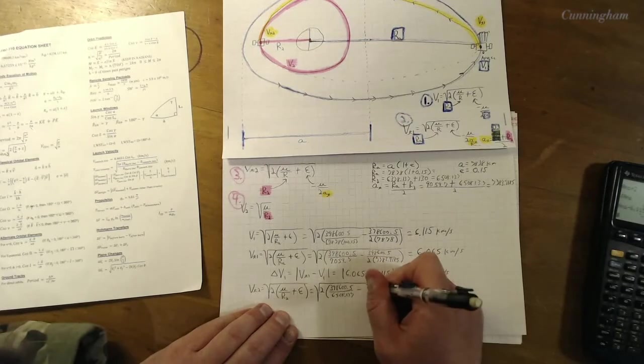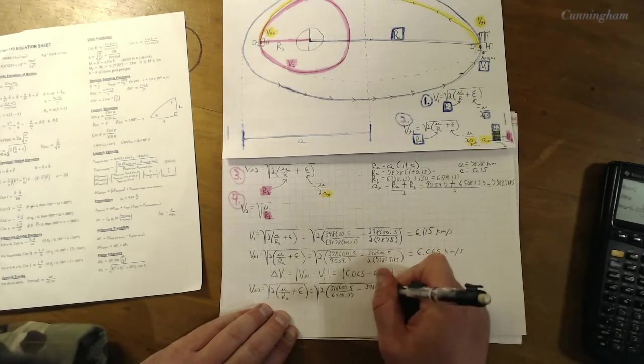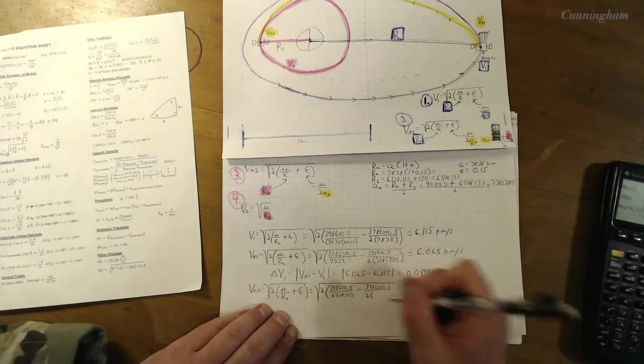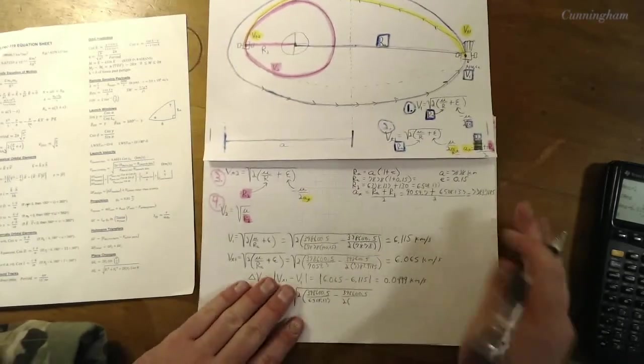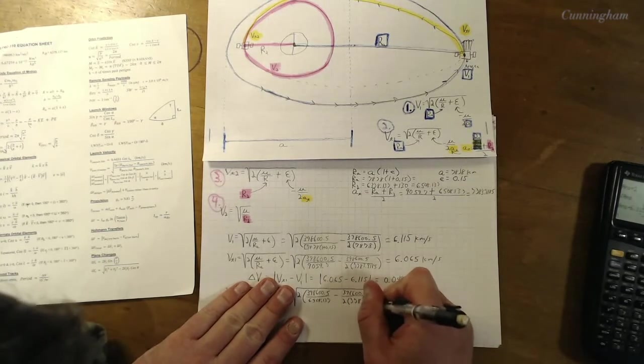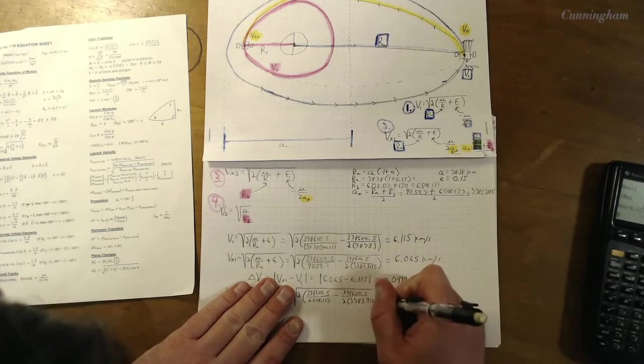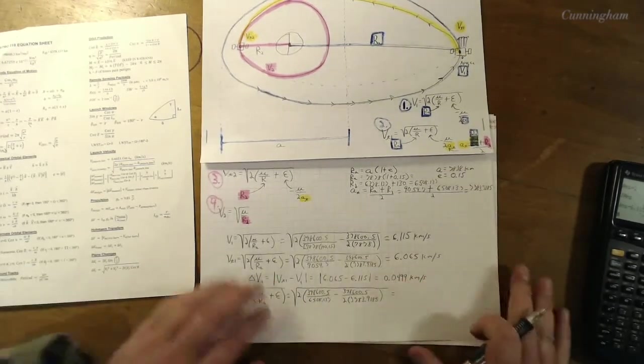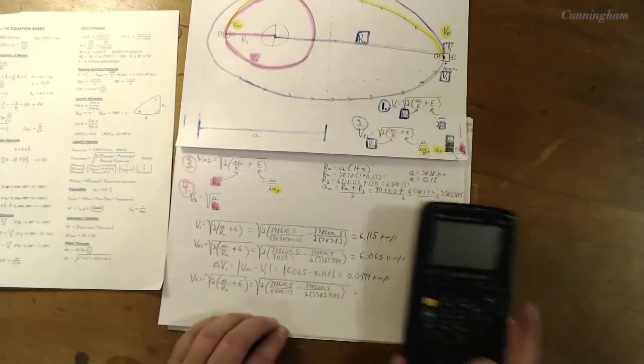So let's plug. 2 times 398600.5 over r sub 2, which was we found, we had to calculate it, but we found it 6508.137 minus 398600.5 over 2 times the size of the semi-axis of the transfer orbit, which is 7783.9185.